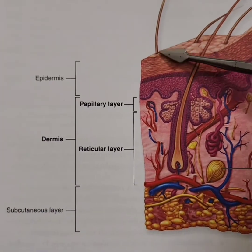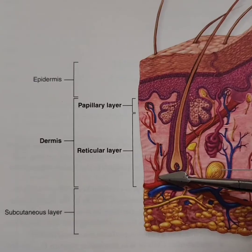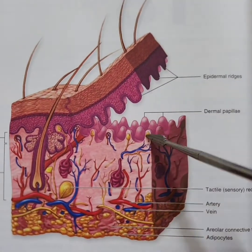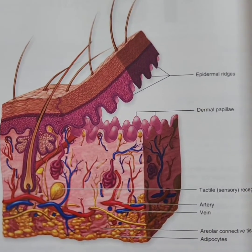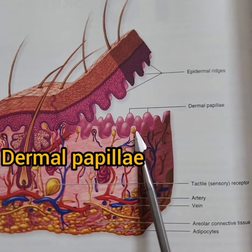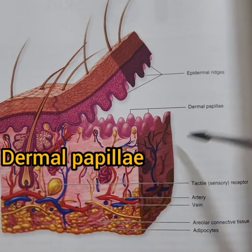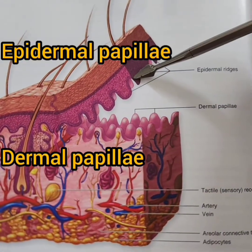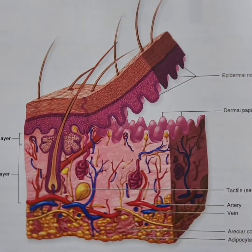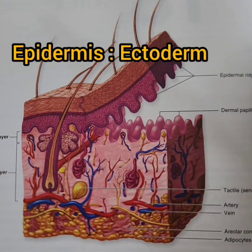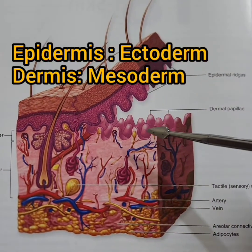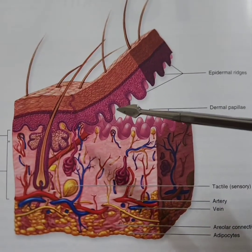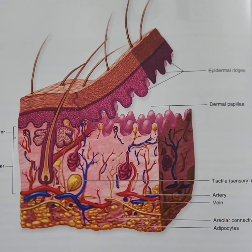Skin is made up of epidermis, dermis, and hypodermis. For understanding purposes, epidermis and dermis are shown separated in this diagram. We can see finger-like projections from the dermis and also from the epidermis — these are called dermal papillae and epidermal papillae. They interlock each other to maintain integrity. Epidermis is developmentally ectodermal, and dermis is developmentally mesodermal. Strong mechanical frictions will not allow them to separate, so nature has provided them with an interlock.